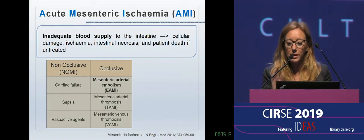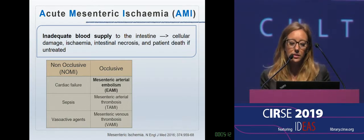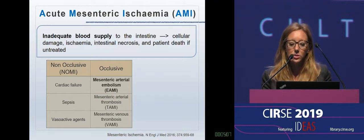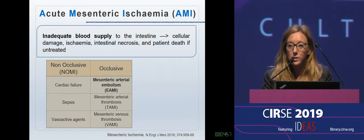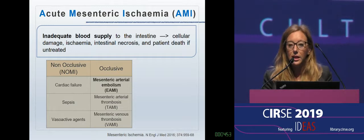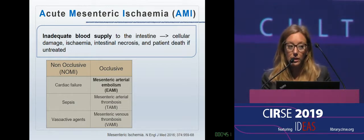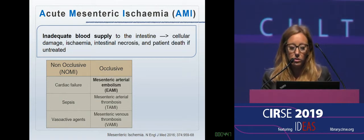Acute mesenteric ischemia is a life-threatening disease caused by an inadequate blood supply to the intestine, leading to cellular damage, ischemia, intestinal necrosis, and if untreated, it leads to patient death. Unfortunately, the mortality is still very high because of the absence of specific clinical signs and specific laboratory tests that can be used by clinicians to detect it early on. It's commonly classified in an occlusive and non-occlusive form.